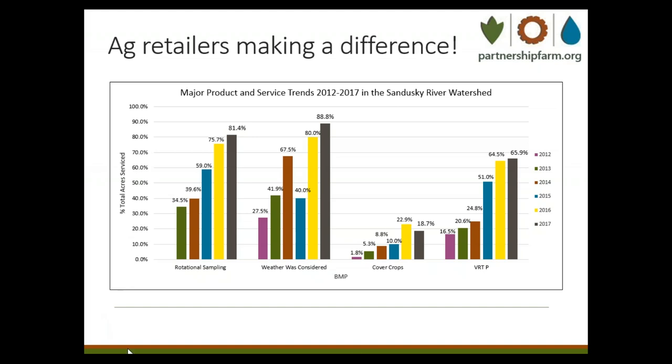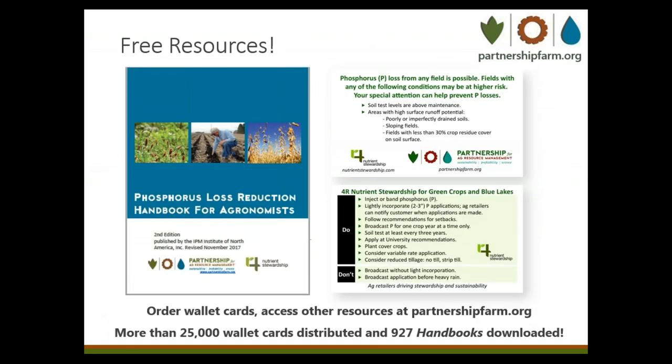It is vital that we track and report the improvements retailers are making so that regulators and the public are aware of these voluntary efforts. Our team also provides free resources for ag retailer employees, grower clients, and consultants available on our website, partnershipfarm.org. On the left is our continually updated and approved agronomist handbook, available free for download. The handbook includes algal bloom updates, trends in customer product and service adoption, and fact sheets that you can provide to grower customers to increase awareness of products and services that reduce nutrient runoff. Our phosphorus loss reduction wallet cards can be ordered for free on our website as well — these are a great conversation starter with your customers. To date, we have distributed more than 25,000.